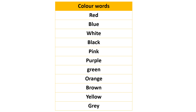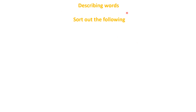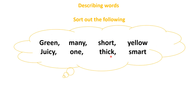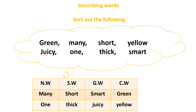Now we are going to do one activity. Here you can see some describing words, and we have to sort them into number words, size words, general words, and color words. 'Green' goes in color words. 'Many' goes in number words. 'Short' goes in size words. 'Yellow' goes in color words. 'Juicy' goes in general words. 'One' goes in number words. 'Thick' goes in size words. 'Smart' goes in general words. In number words: numbers, number names, many, more, some, a few, a, and.